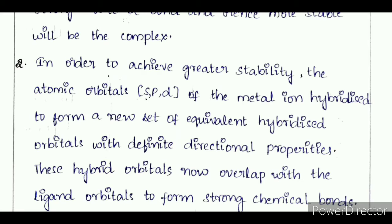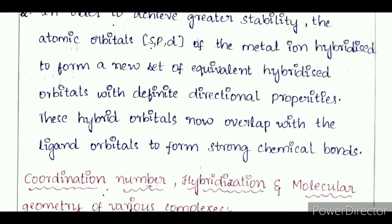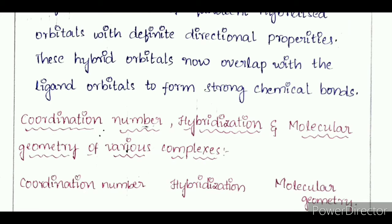These hybrid orbitals overlap with the ligand orbitals to form strong chemical bonds — sigma bonds — due to interaction between metal ion and ligand ions. Now we look at coordination number, hybridization, and molecular geometry of various complexes.